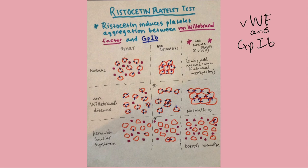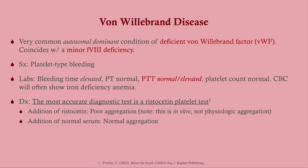Von Willebrand's disease is an autosomal dominant condition characterized by a deficiency of Von Willebrand factor. There is also a minor factor VIII deficiency — not enough to cause factor-type bleeding symptoms, just platelet-type bleeding. This often presents in young women with menorrhagia. Von Willebrand's disease and Bernard-Soulier syndrome both lead to abnormal ristocetin results but in slightly different ways.